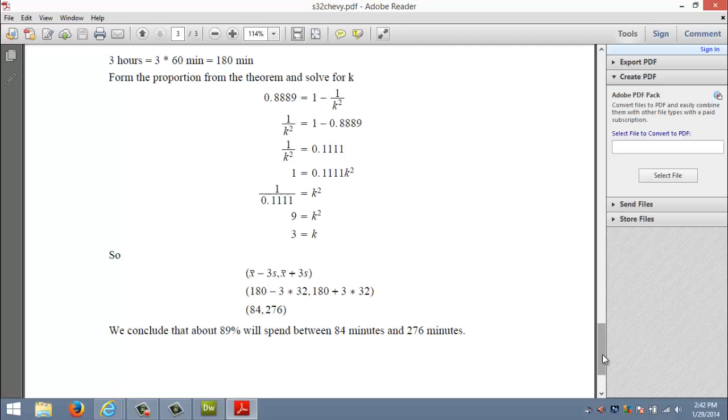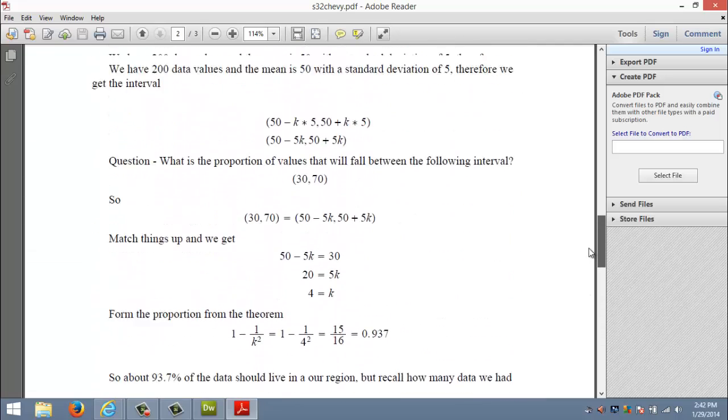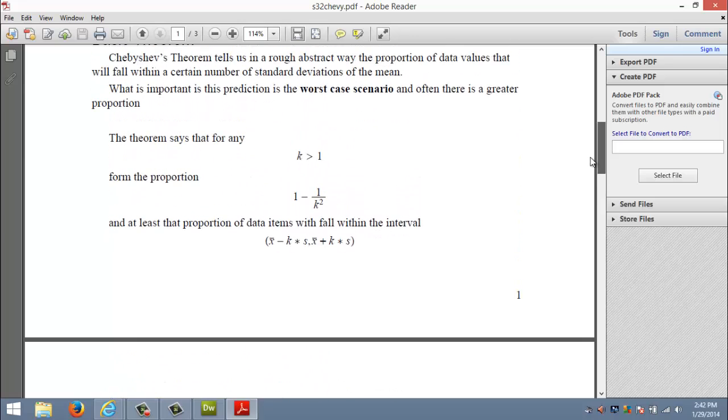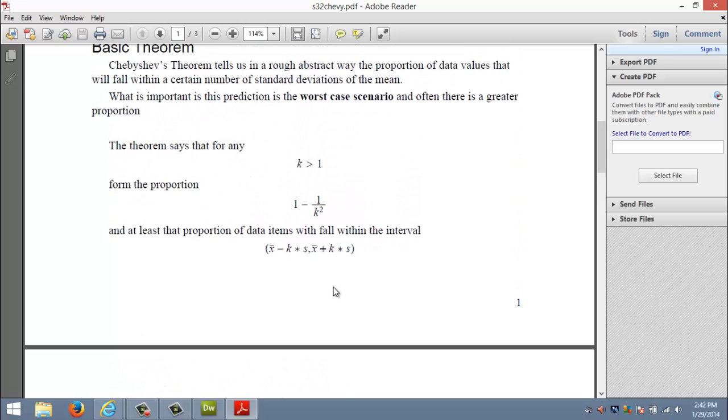Chebyshev's theorem is a confusing theorem, but just keep reminding yourself it's only predicting. That's its only role. It's predicting what proportion of your data has to live in a particular interval on the number line. That interval is going to be centered at the mean, whether you go mean plus k standard deviations or mean minus k standard deviations. And for a given k, this particular 1 minus 1 over k squared will give you the proportion that you're after.